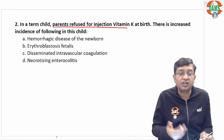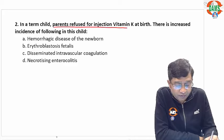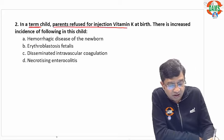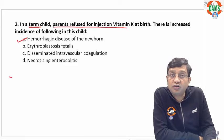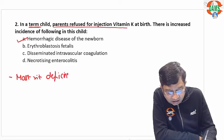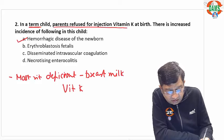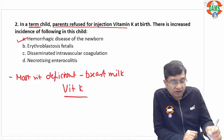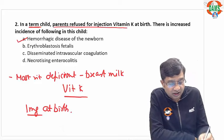Moving on to the next question: in a term child, parents refused injection vitamin K at birth. There is increased incidence of which condition? Vitamin K decreases the incidence of hemorrhagic disease of the newborn. A frequently repeated FMG exam question is: which vitamin is most deficient in breast milk? The answer is vitamin K. We give injection vitamin K to every child at birth. In a term child, the dose is 1 mg at birth.